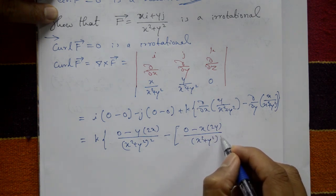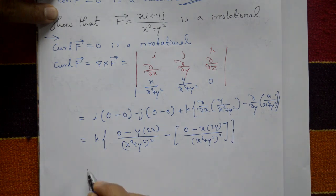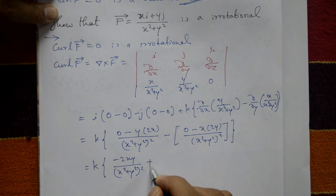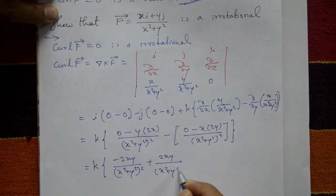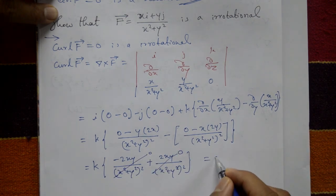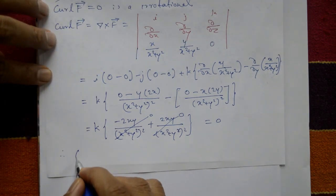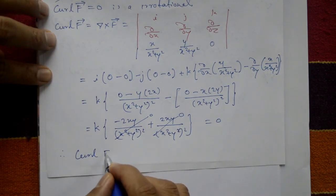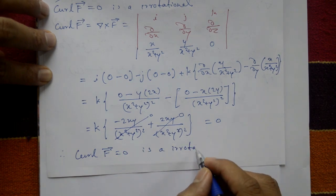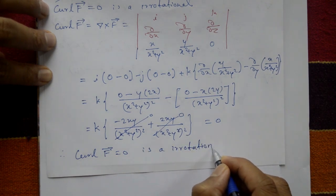This gives k into [−2xy/(x²+y²)²] minus [−2xy/(x²+y²)²]. The plus and minus cancel, giving zero. Therefore curl F = 0, so the field is irrotational.